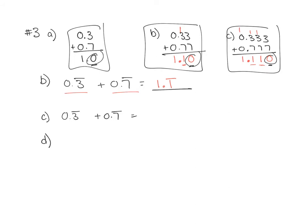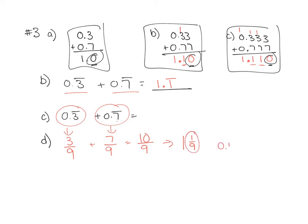Question 3D asks us to figure this out by turning the repeating decimals into fractions. So 0.3 repeating becomes 3 out of 9, and 0.7 repeating becomes 7 out of 9. When I add them, my denominator stays the same but 3 plus 7 gives me 10, so I get 10 out of 9. Turning this into a mixed number: there's 1 group of 9 in 10, leaving 1 ninth, and 1 ninth is 0.1 repeating. So adding that to one whole gives us 1.1 repeating — the same answer as Part B.